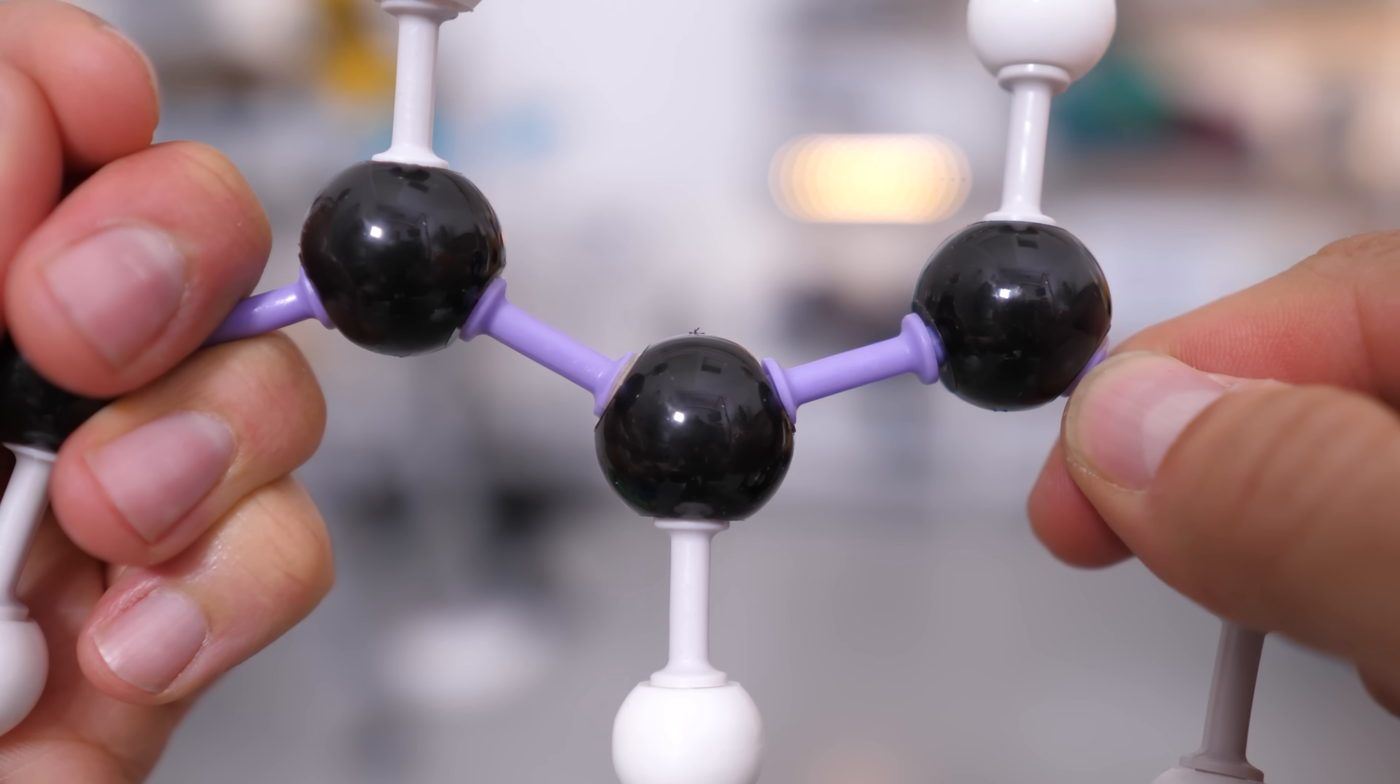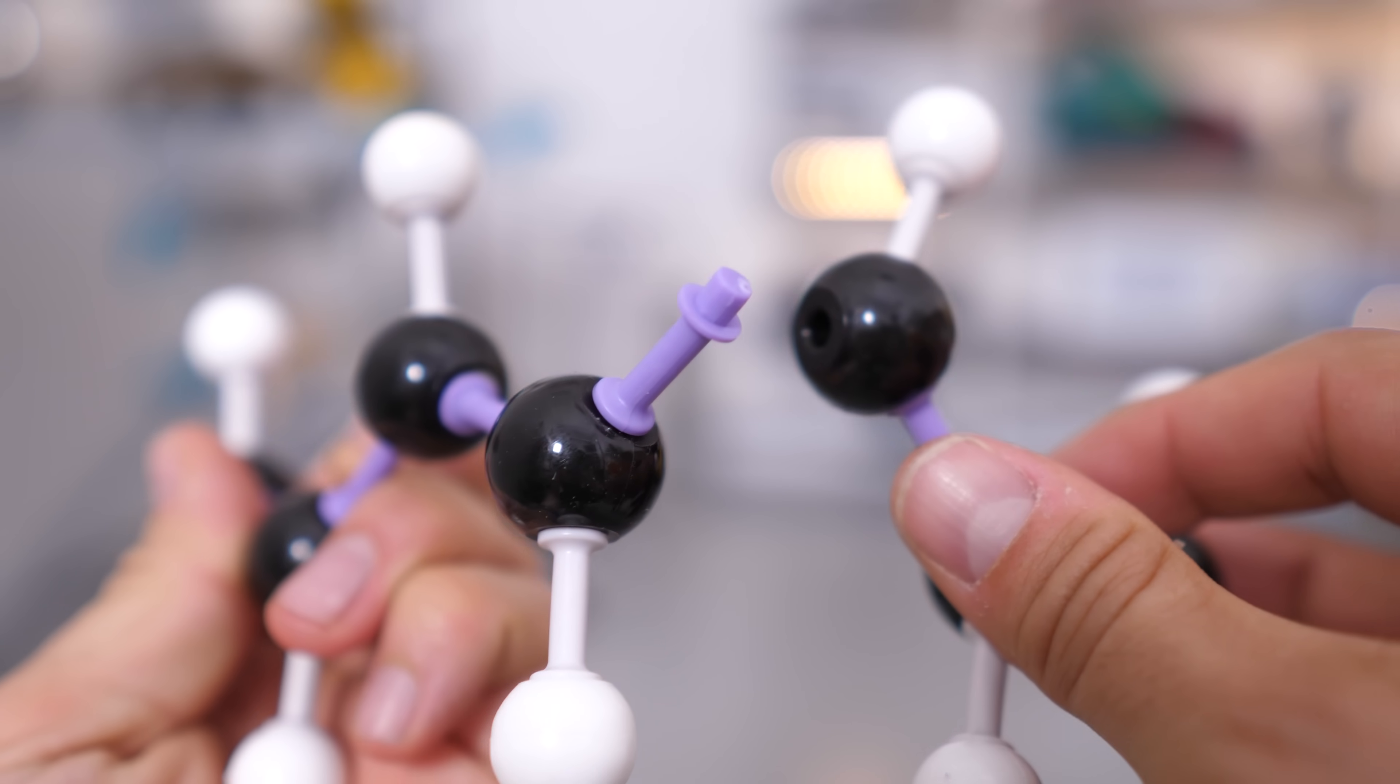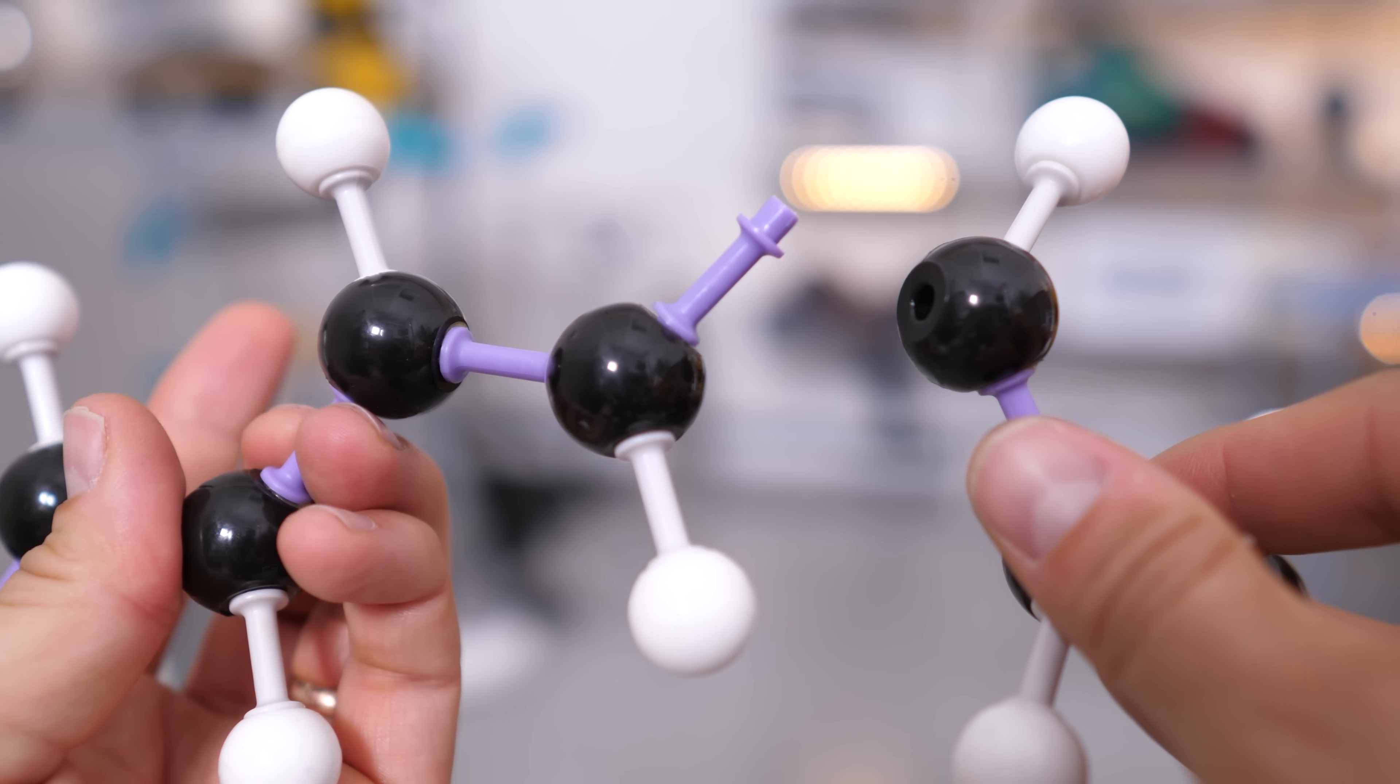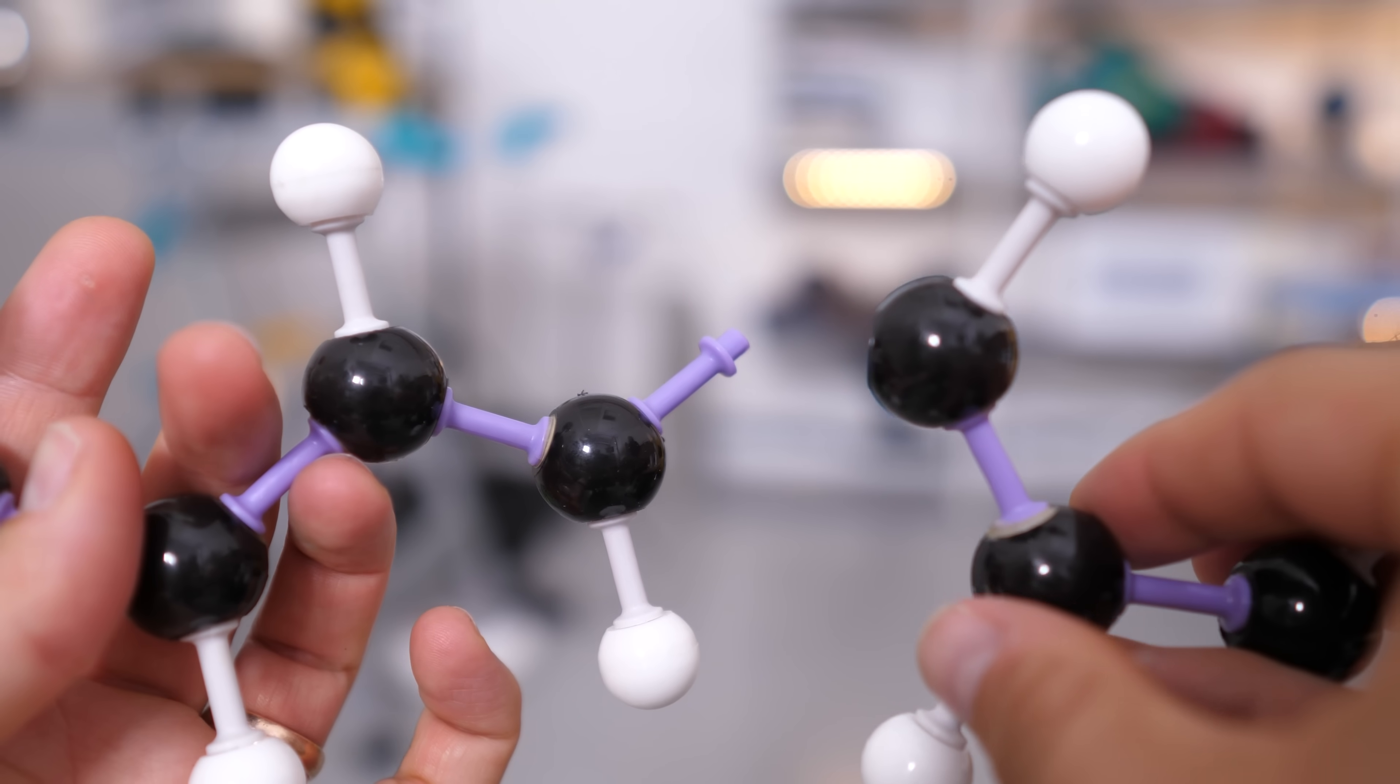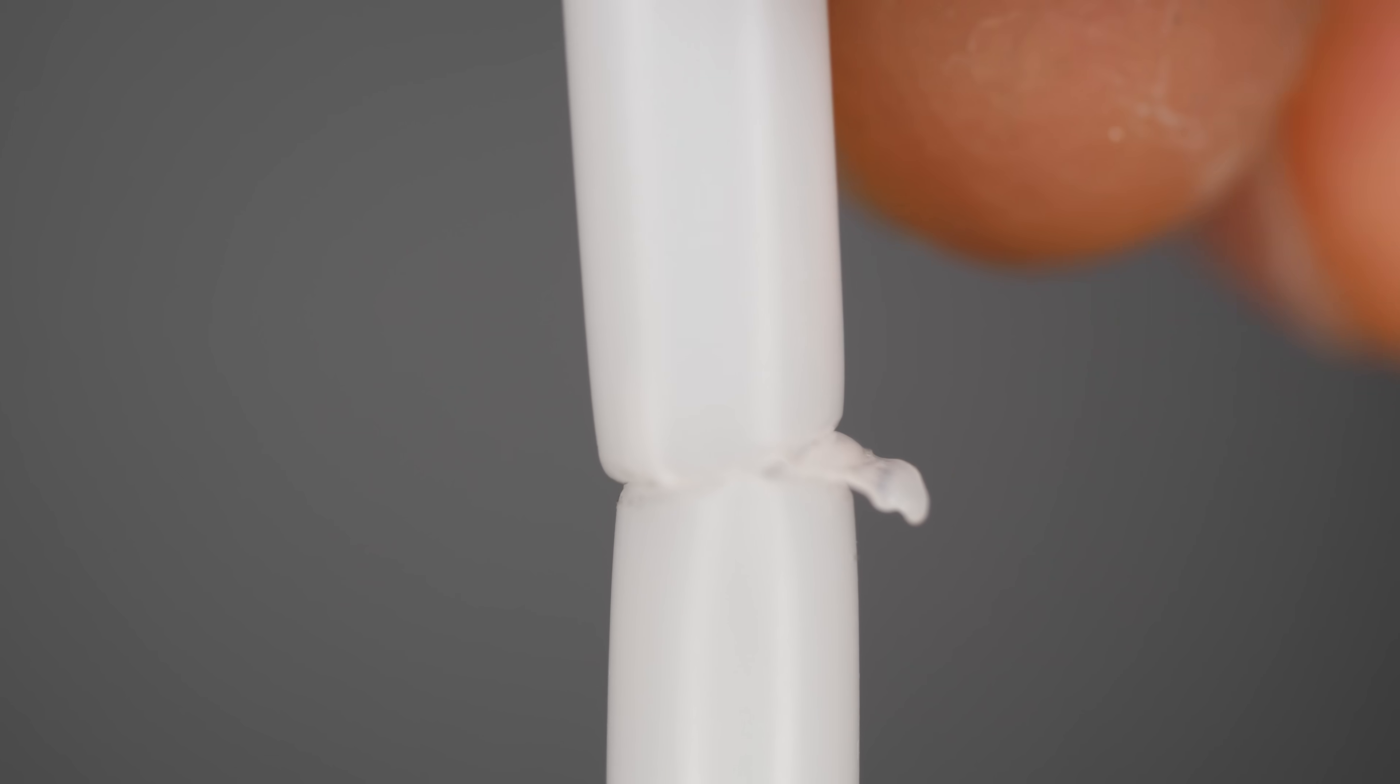When you break a covalent bond like this you're left with radicals, that's atoms that have unpaired valence electrons. They're incredibly reactive so we should expect the exposed surface atoms to react with molecules in the atmosphere or if it was in a vacuum I imagine they would react with the atoms around them in the substance itself and so that exposed surface becomes unreactive. It's not sticky anymore. If you press those two surfaces together those bonds aren't going to reform unless you can introduce quite a high activation energy.